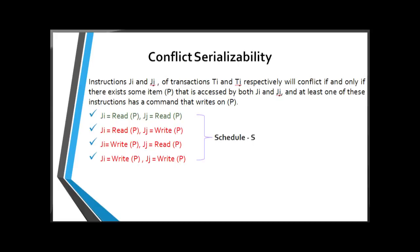The next slide is about Conflict Serializability. Instructions Ji and Jj of transactions Ti and Tj respectively will conflict if there exists some item P that is accessed by both Ji and Jj, and at least one of these instructions has a command that writes on P. To understand this, let us look at Schedule S. In Schedule S, the first line is where Ji reads on data item P and Jj also reads on data item P. In this case there is no conflict.